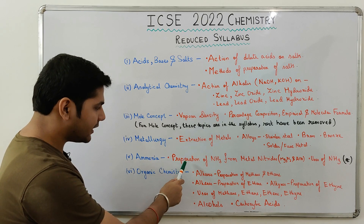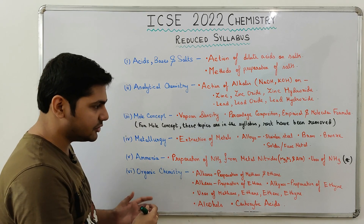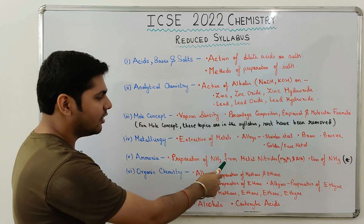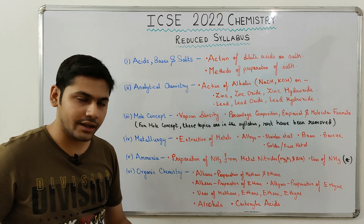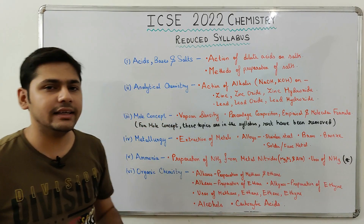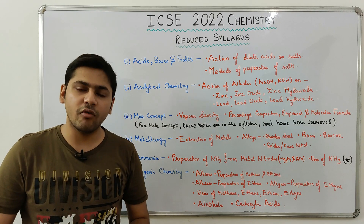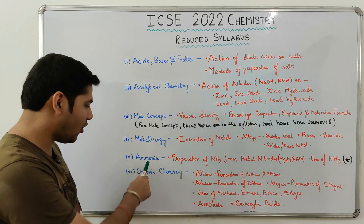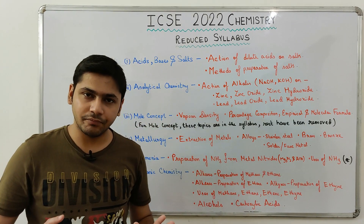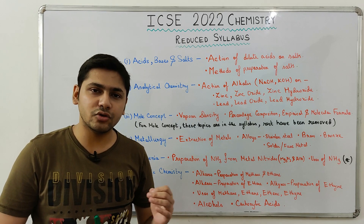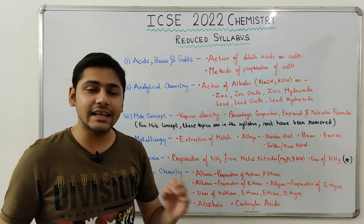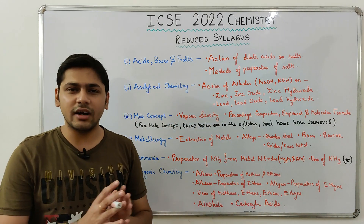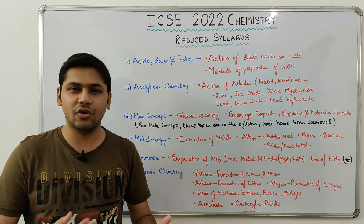Next, from Ammonia, Preparation of Ammonia from Metal Nitrides — Mg3N2 and AlN — has been removed. So you don't have to study the preparation of NH3 from Mg3N2 and AlN. Regarding Uses of Ammonia, in the reduced syllabus overview section it is mentioned, but in the detailed section it has been removed. It is best that you ask your school Chemistry teacher whether Uses of Ammonia is in the reduced syllabus. That is why I have put a star mark here. Even if it is there, it's not a big deal — you only have to learn three or four uses.